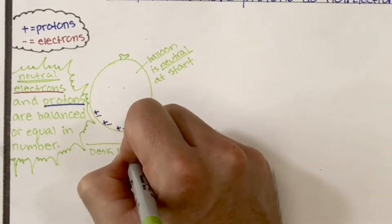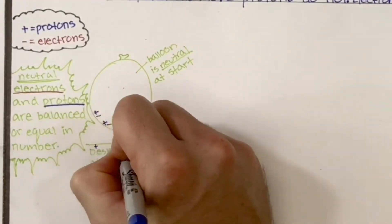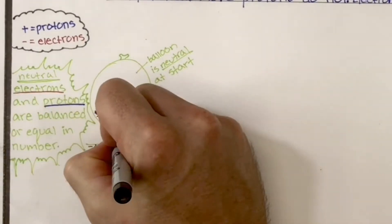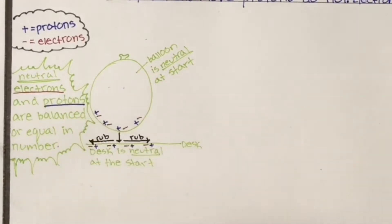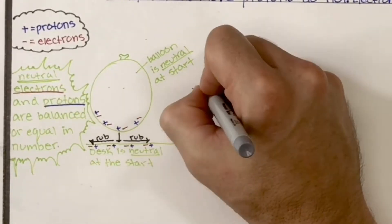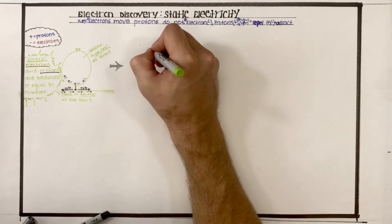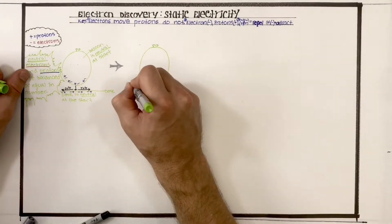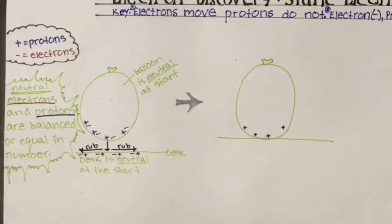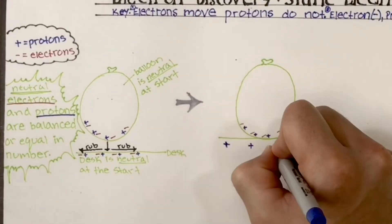Below that balloon, we have our desk. The desk is also neutral when we start, which means there's the same amount of protons present as electrons. And what we did with the balloon is we moved it to the desk and we rubbed it back and forth. So what happened when we rubbed the balloon back and forth? We need to redraw frame by frame what was going on in our balloon.